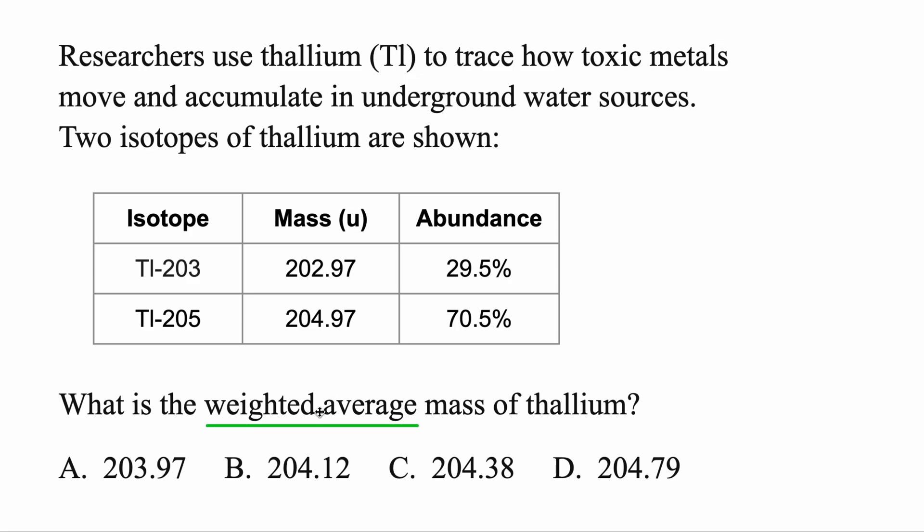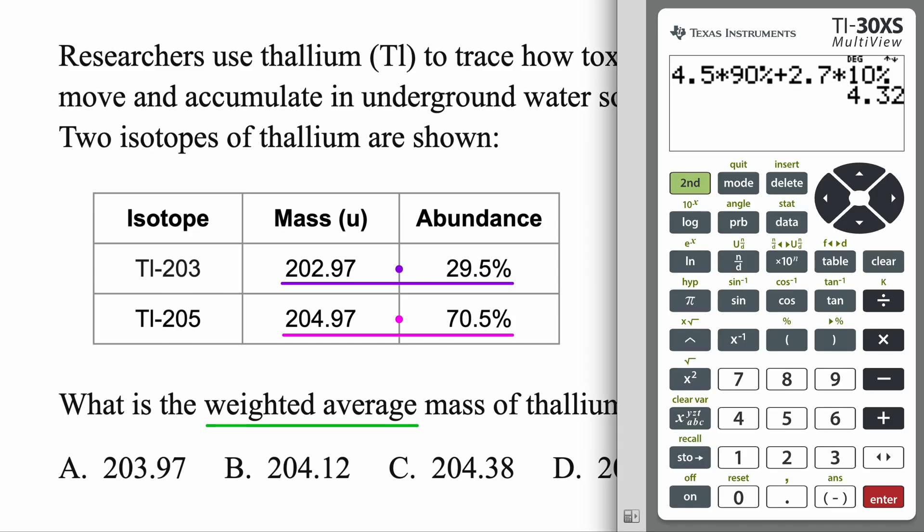Weighted average also shows up on GED Science. Researchers use thallium, T-L, to trace how toxic metals move and accumulate in underground water sources. Two isotopes of thallium are shown. Here are two isotopes. They have different masses, and they show up with these percents. What is the weighted average mass of thallium? But these are easy for you now, because you already know what to do. Let's go ahead and take our two masses, multiply them by those percents, and add them together with the calculator. So super easy once you've done a couple of these.